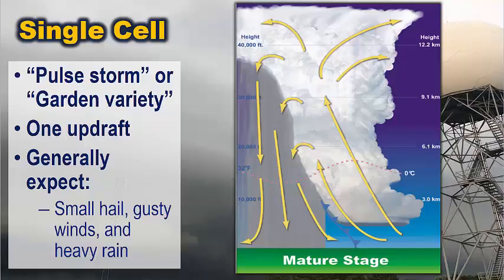The first type of thunderstorm we're going to cover is the single cell storm. You may hear this referred to by a couple of different names such as Pulse Storm or Garden Variety Storm. A single cell storm consists of one updraft, usually a very low probability of severe weather. Usually severe weather does not occur with these type of storms, but we can get small hail, gusty winds, and heavy rain. In the diagram, you can see a well-developed updraft, but a downdraft quickly forms with this type of storm, and this downdraft will dissipate that updraft quickly. So these are not very long-lasting storms, and the threat of severe weather is low.